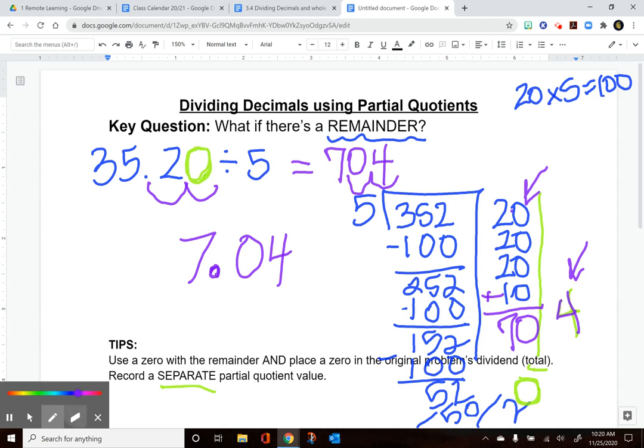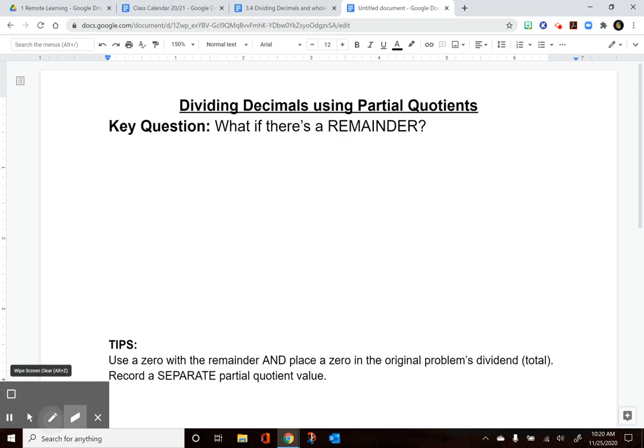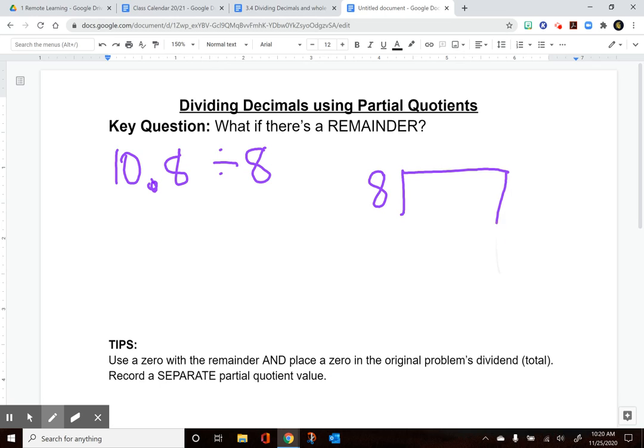Let's try another one. This time I'm going to take 10.8 and split it into groups of eights. Set up my partial quotient math problem here. I'm going to ignore the decimal again until later and start splitting.